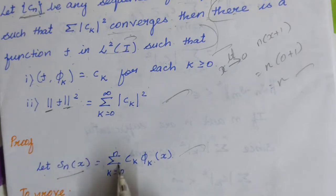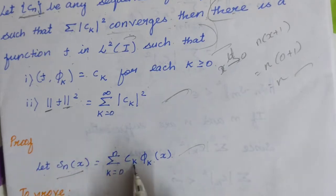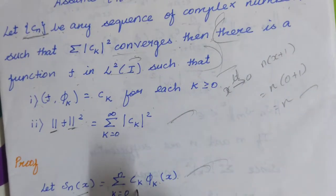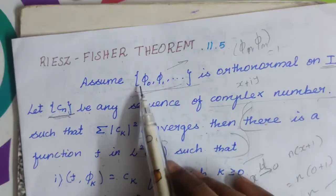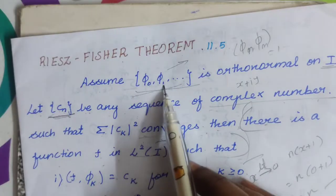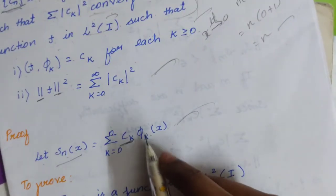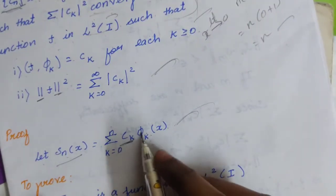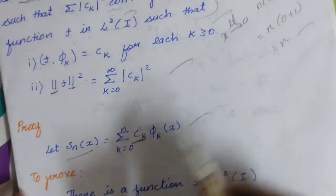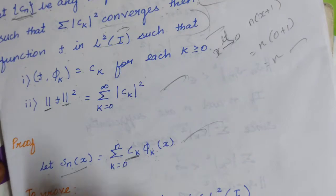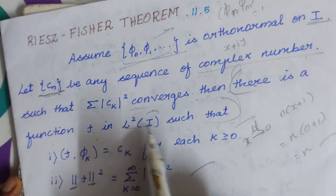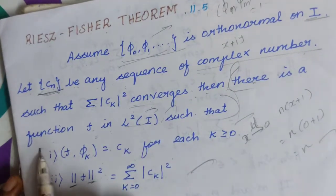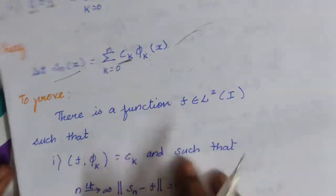Proof: Let Sₙ(x) equal summation from k equal to 0 to n of cₖ φₖ(x), where cₖ is a complex number and φₖ is a set of functions. So Sₙ(x) equals summation k equal to 0 to n of cₖ φₖ(x). We have to prove that there exists a function f in L²(I), so we need to prove that limit as n tends to infinity of the norm of Sₙ minus f equals 0.